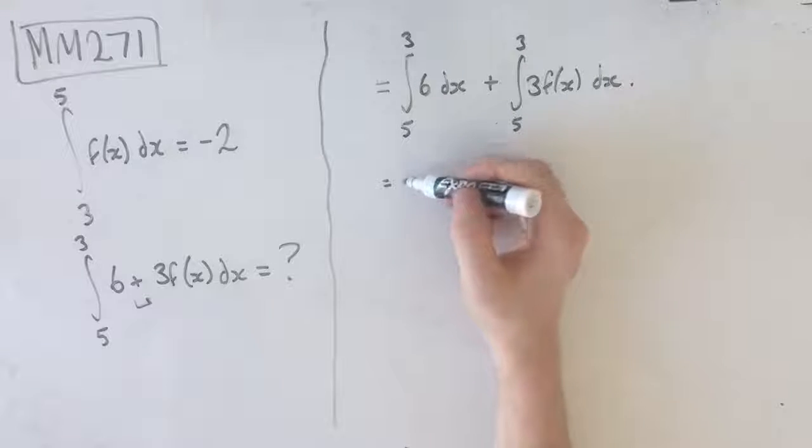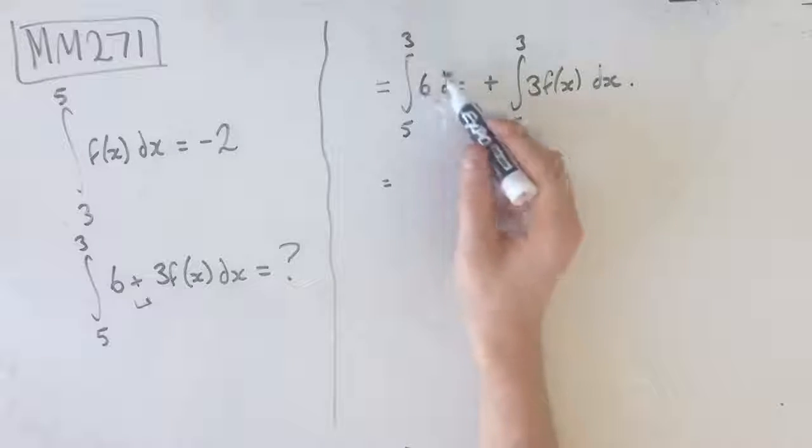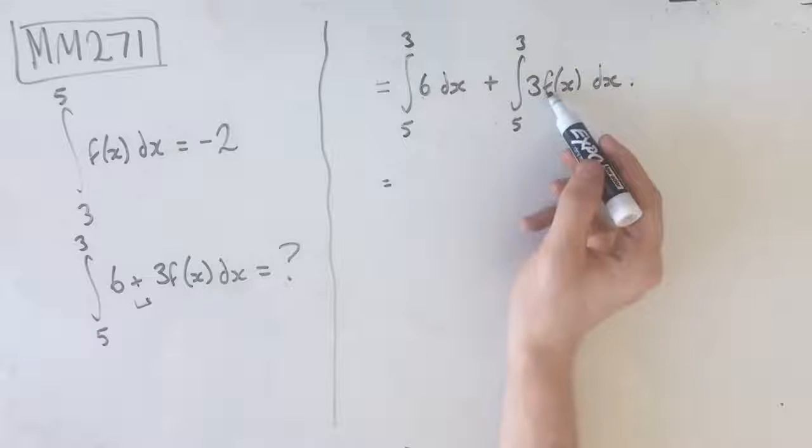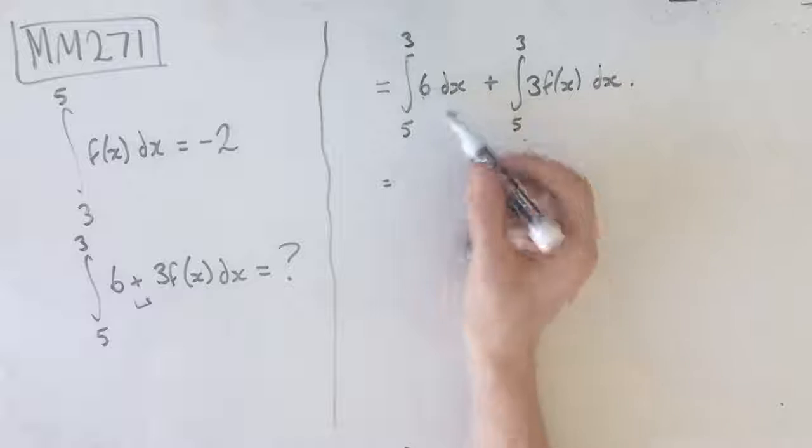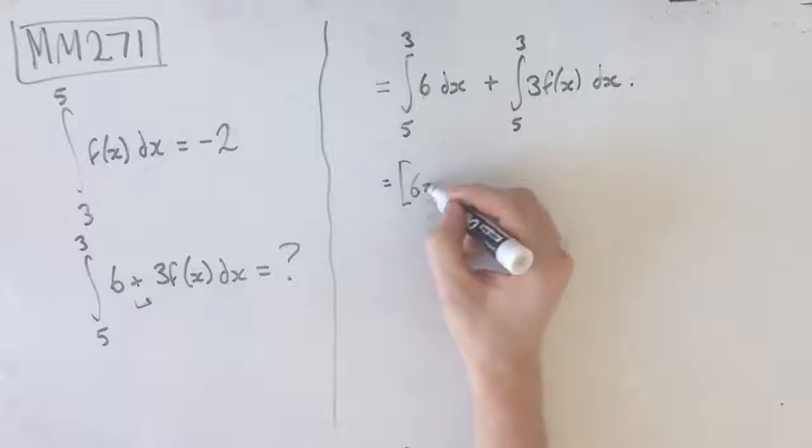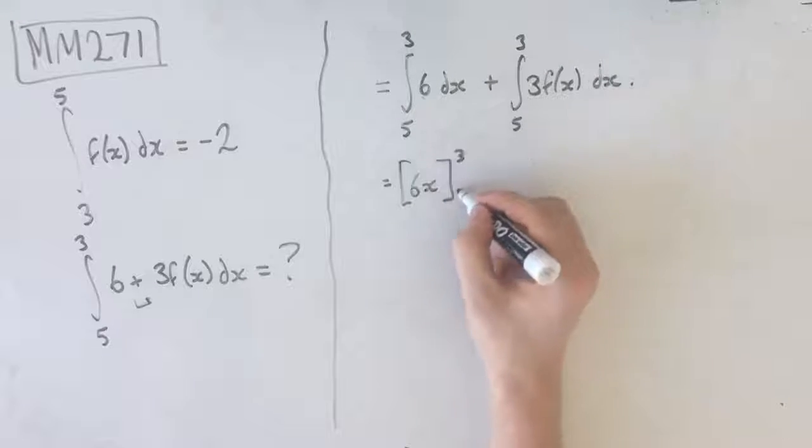From here we can actually integrate this normally. We don't know what f(x) is, so we're going to have to use this, but with 6 we can actually just integrate that normally. The integral of 6 is 6x from 3 to 5.